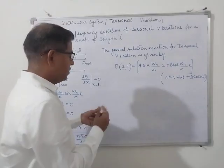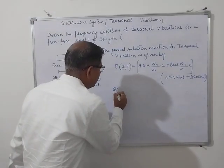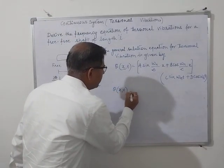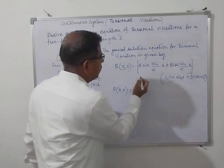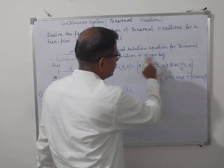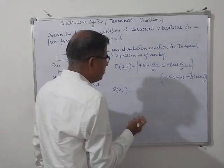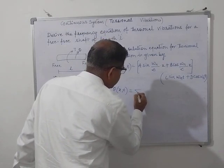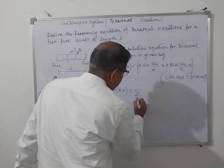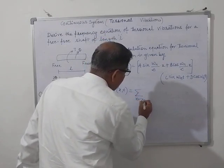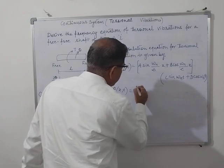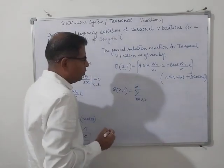The general solution θ(x, t) can now be written. Since A = 0, the sine-in-x term vanishes.